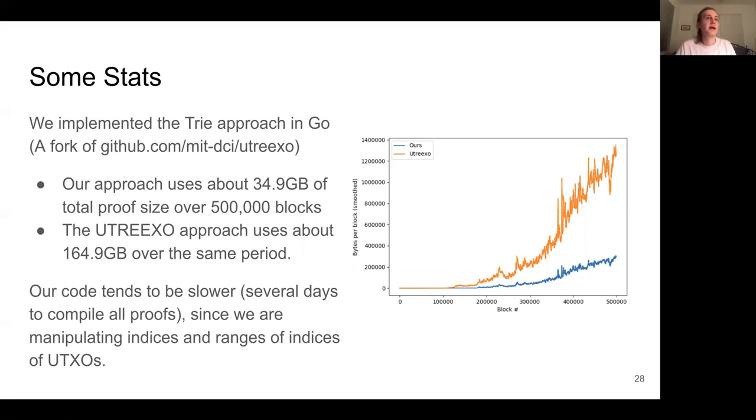One drawback is that our code does require a lot of disk access, so it tends to be slower. In fact, it takes several days to compile all of the proofs in our code, whereas the utreexo code runs in about a day.